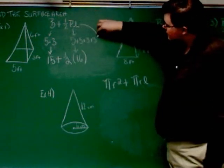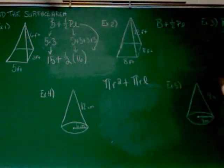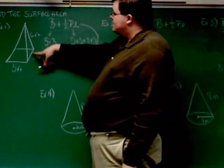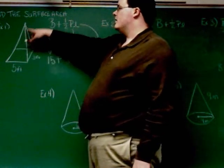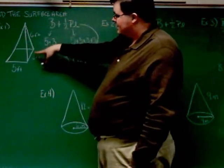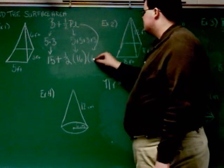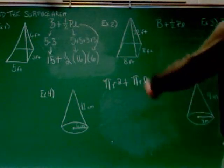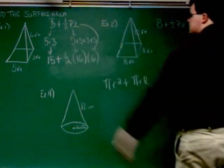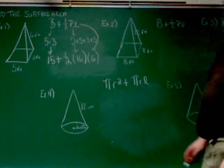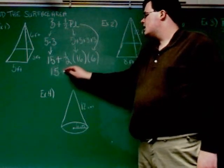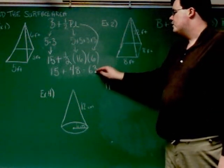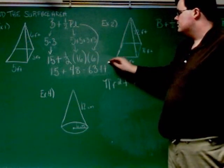The last thing we've got is L, the slant height — the number we haven't used yet. That's the six-feet number going up the side, shown as a dashed line, kind of like a hidden line. So L is six. Just a little bit of arithmetic here: half of 16 times 6 is 8 times 6, which is 48. Then 48 plus 15 gives me 63, and that would be feet squared.